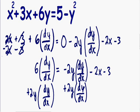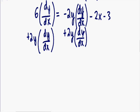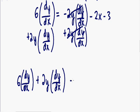After simplifying, notice that on the right hand side the negative 2y dy/dx and positive 2y dy/dx cancel out. On the left hand side we have positive 6 dy/dx and positive 2y dy/dx. On the right hand side, the only thing we're left with is negative 2x and negative 3.